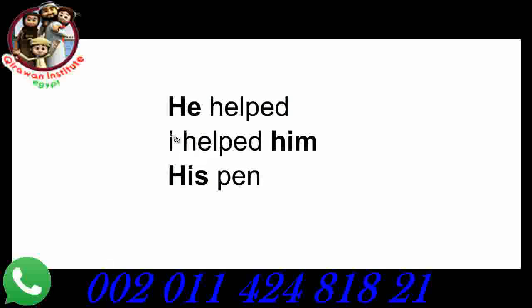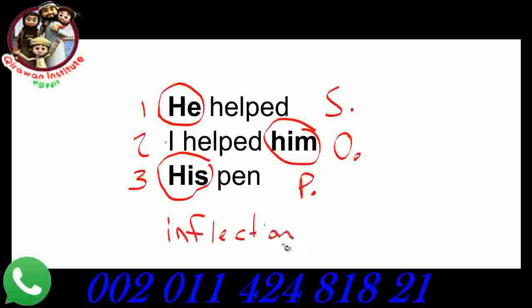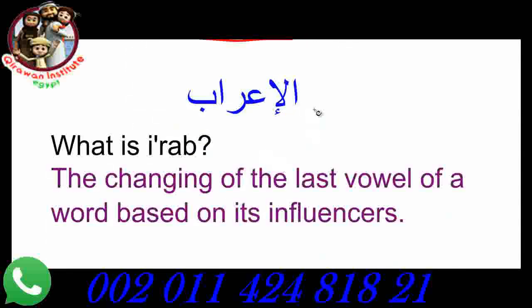So before we start lesson 9, I want everyone to look at this. These are three English sentences where the pronoun he, him, and his is the same masculine pronoun, but because of its position in the sentence, the way it is written has changed. Here it's 'he helped' where he is the subject, and when it's the object, it's 'I helped him,' not 'I helped he.' And when it's in possession of an object, it's 'his pen,' not 'he pen.' This in English is called inflection. In grammar, in Arabic, it's called al-i'raab, and that is the subject for today's video.